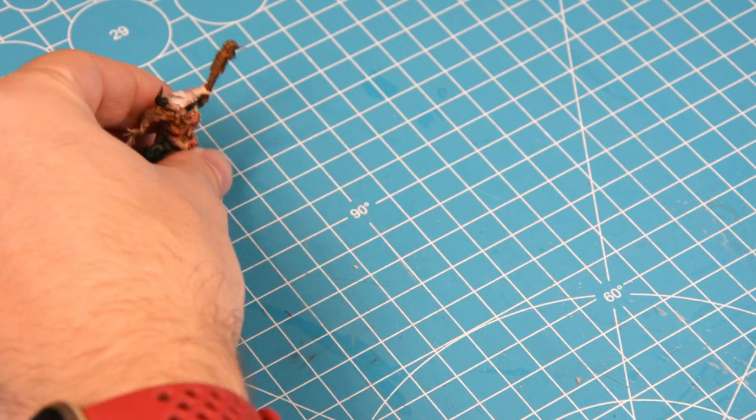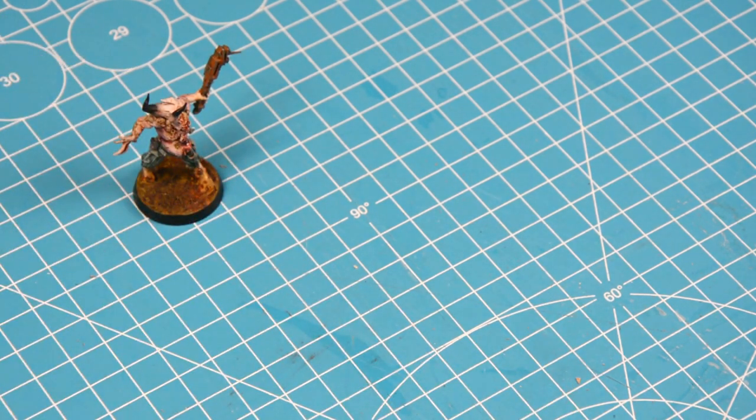Next up, we're going to make loops. It's a good idea to have a miniature around so you can compare the scale of the loops.